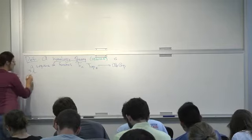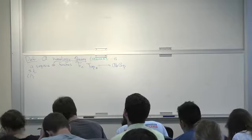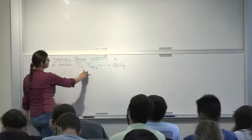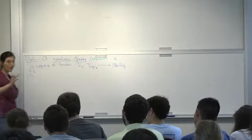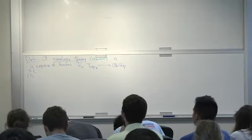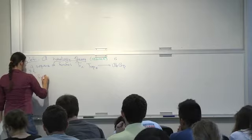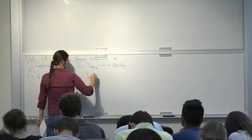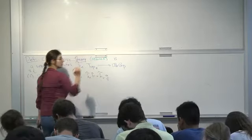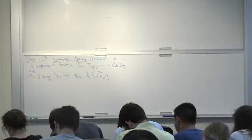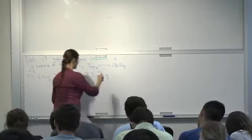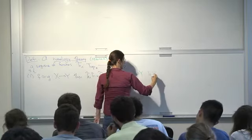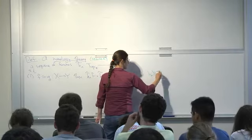First, we wanted it to be the same on homotopy equivalent spaces. So if two maps are homotopic, they had better give the same result. If F is homotopic to G, both going from X to Y, then hₙ(F) equals hₙ(G). Exercise: check that this means if X is homotopy equivalent to Y, then hₙ(X) is isomorphic to hₙ(Y).